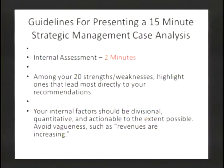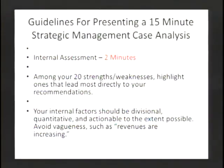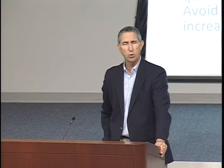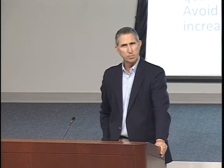The internal assessment — two minutes is about right. You want to showcase probably six, seven, or eight of your 20 total strengths and weaknesses, focusing on the ones most directly leading to your strategies and recommendations. There's a need to be as specific — that is quantitative — and divisional, by segment, and as actionable as possible in stating those strength and weakness factors, as they provide the foundation for the later matrices and formulation process.